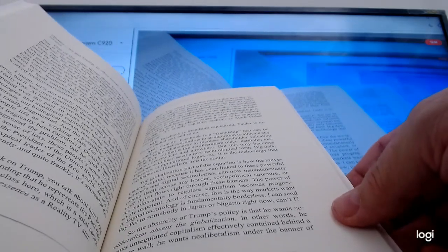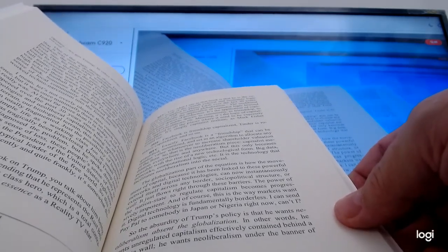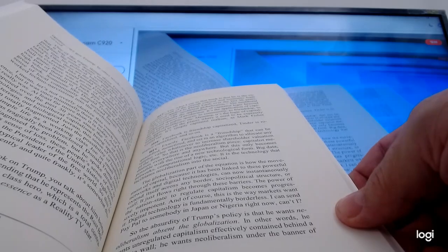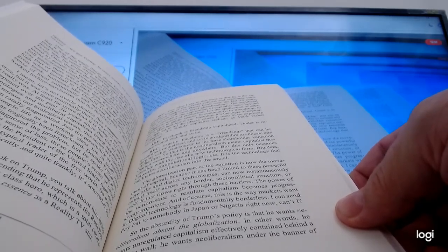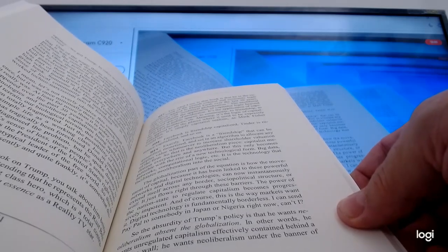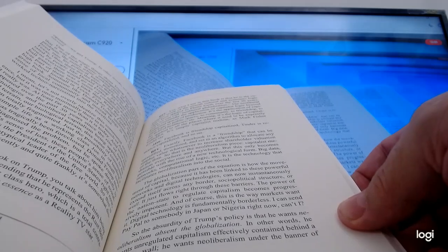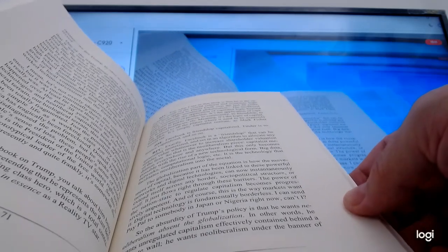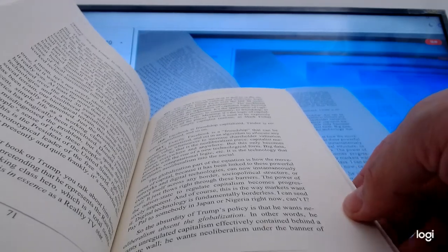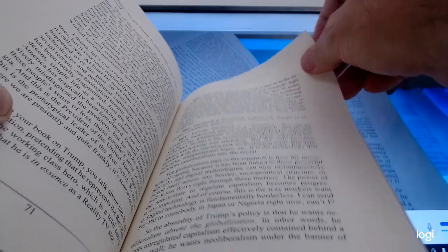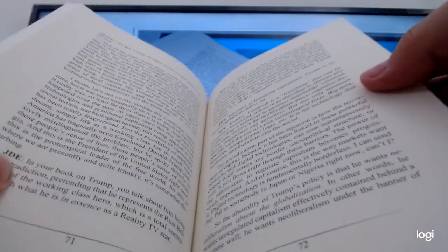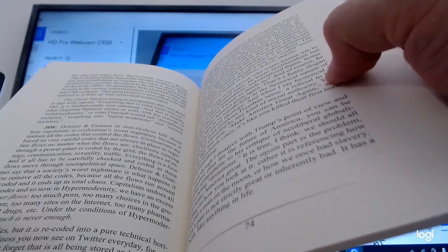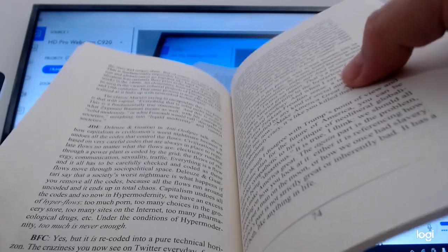Ebert: Facebook is friendship capitalized, Tinder is romance capitalized, and so on. Culkin: Exactly. Facebook is a friendship that can be quantified, monetized, and set in an algorithm to allocate any surplus value whatsoever to increase shareholder valuation of the firm. So that is the neoliberalism piece—capitalist mediation everywhere and anywhere. But this only becomes possible with the rise of a new technological form: big data, networks, computational logic. It is the technology that facilitates neoliberalism into the social. The globalization part is how the movement of capital, because it has been linked to these powerful networks and digital technologies, can now instantaneously extend itself across any border, sociopolitical structure, or wall.